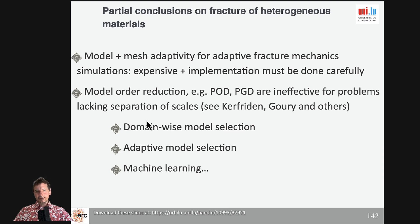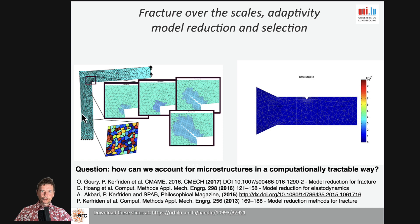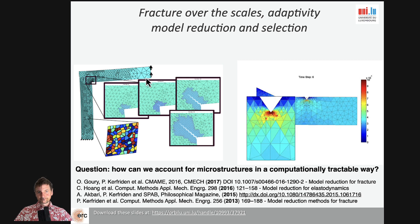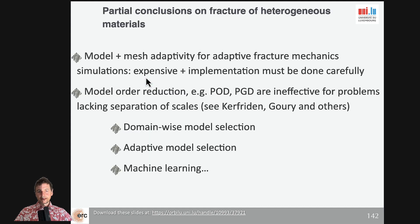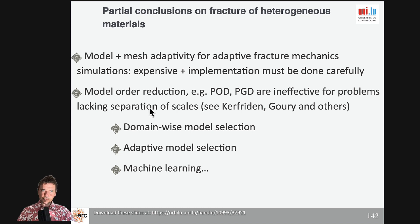What you try to do is take into account explicitly the microstructure everywhere in the component. There are three approaches: semi-concurrent, concurrent, and adaptive. What I will talk about next time is how to deal with adaptive model order reduction. Some partial conclusions: we have model plus mesh adaptivity for adaptive structures, which is quite expensive. We can use model order reduction, for example POD or PGD, but when we have lack of separation of scales it's very difficult. We can use domain-wise model selection, adaptive model selection, and machine learning.